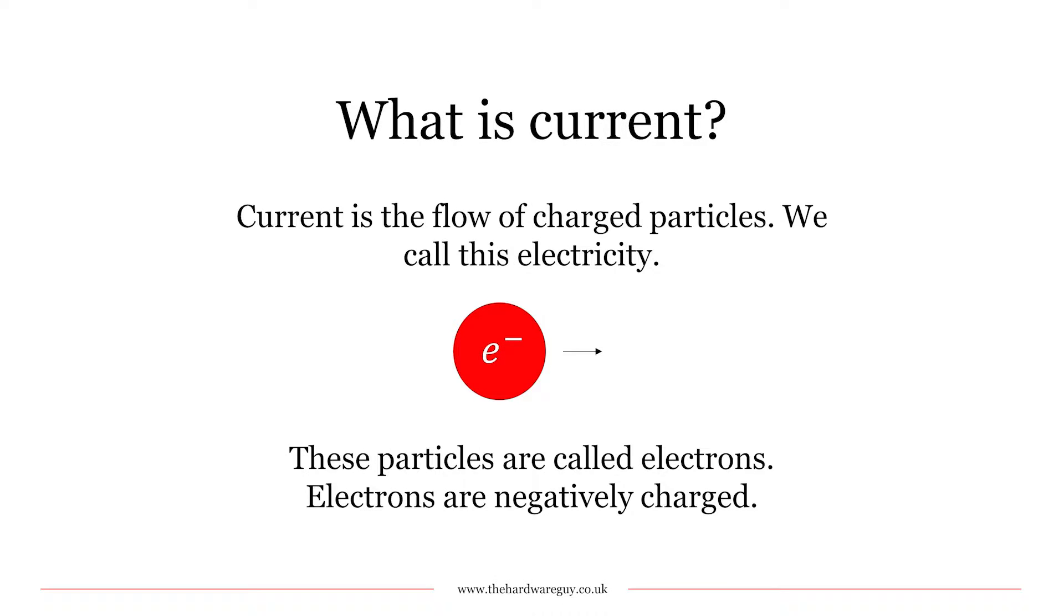Without getting too deep into physics, this is the definition stuff that we just need to know. Current is the flow of charged particles in a circuit, and we call this electricity. These charged particles are called electrons, and the most important thing to remember about electrons is that they're negatively charged.